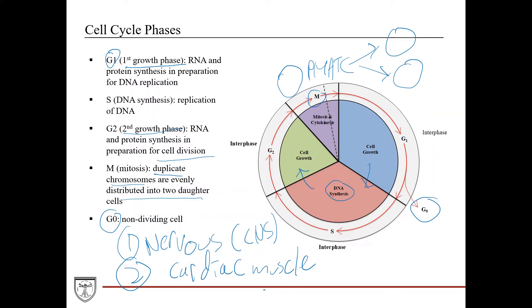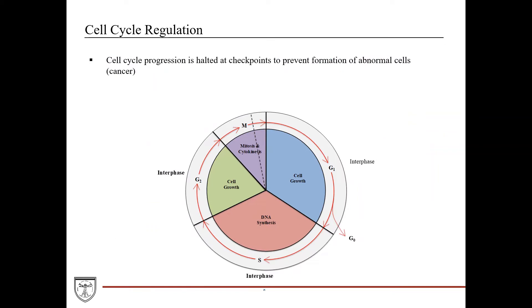Cell cycle regulation is a heavily regulated process because, again, you can develop cancer. As you progress through the cell cycle there are checkpoints that prevent any kind of abnormal cell formation—such as DNA damage or mutations that are caught. If a mutation occurs during DNA synthesis, you want to halt and correct it rather than jump into mitosis, because you don't want to pass that on to daughter cells. If that's not caught and it just proceeds, that's an example of where cancer can occur.